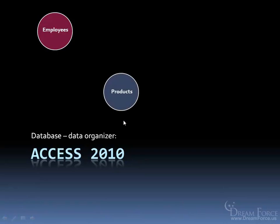Other things I can keep track of are products. My company sells products, but I want to keep track of it separate from my employees. Now in Microsoft Access, to keep track of them separately, they have what are called tables. This would be a table of information all about the employees, and this would be a separate table all about products — things like the product ID, the product name, how much I have in inventory.